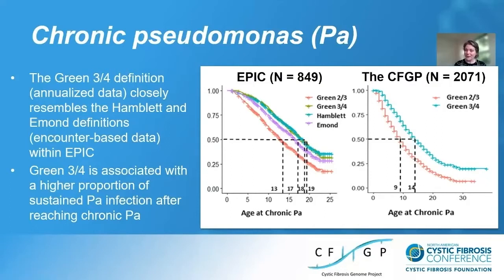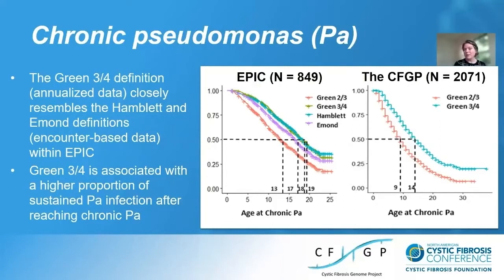When we apply the two annualized data-based definitions to the entire CFGP, we see a pattern similar to what we saw in EPIC. The 'green two out of three' definition requires positive cultures in two out of three consecutive years and has a younger age at chronic PA — not surprising, as you don't need as much evidence. The 'green three out of four' definition is more similar to the Hamlet and Eman definitions, and also showed a higher proportion of sustained PA after reaching the chronic PA definition. Our takeaway is that if you need a chronic PA definition based on annualized data, the 'three out of four' definition is the way to go.